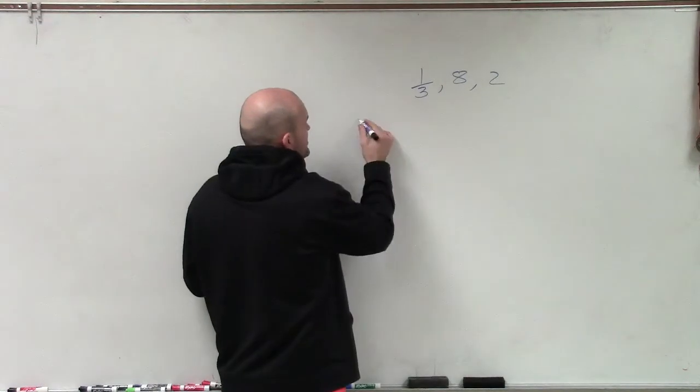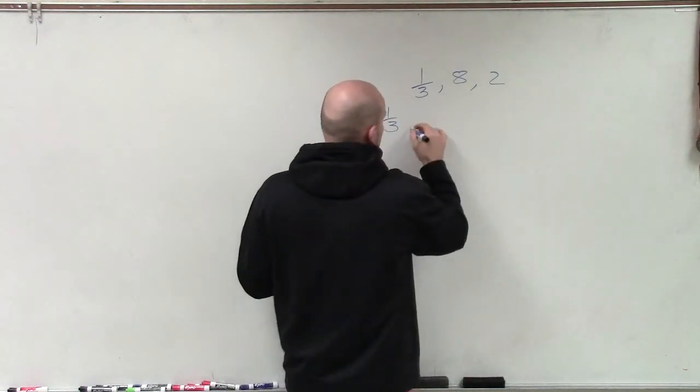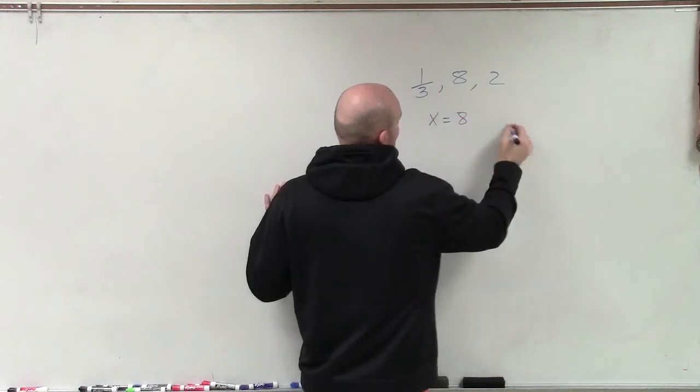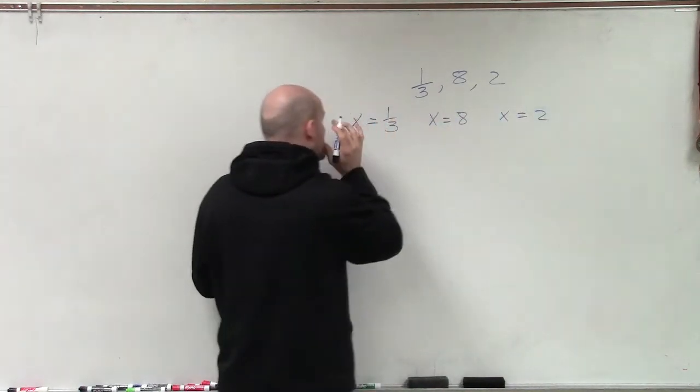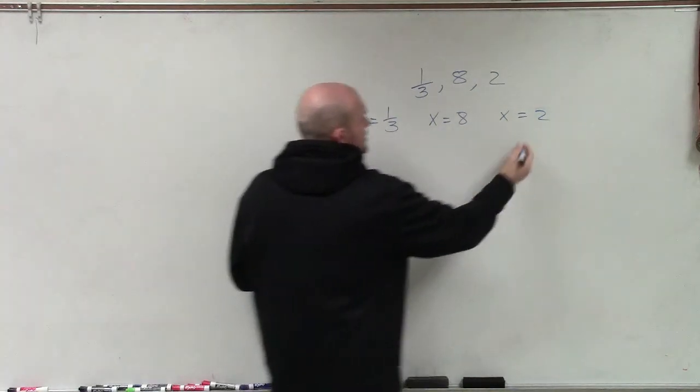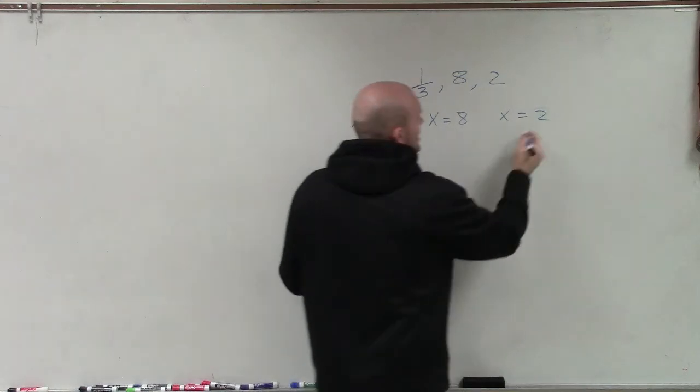So our normal case that we'll do is we'll take our zeros and we'll set them all equal to 0. So x equals 1/3. We could say x equals 8, and then x equals 2. Now, so the common thing that students will do is they, just like what we've done for all of them, is now we set these equal to 0 so we can go backwards on the 0 product property.